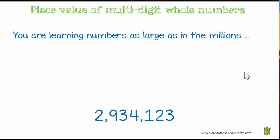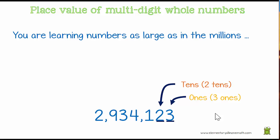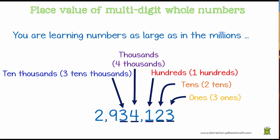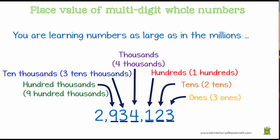This number is 2,934,123. Each digit has a value. Let's look at it. We start in the 1s and we say there are three 1s. Then in the 10s we have two 10s. In the hundreds we have 100. In the thousands, we have four thousands — 4,000. In the tens of thousands, we have three tens of thousands. In the 100,000s we have 900,000. And in the millions we have two million.